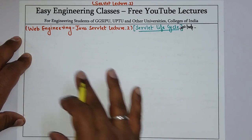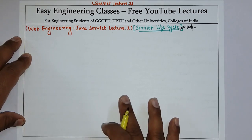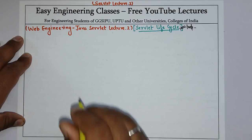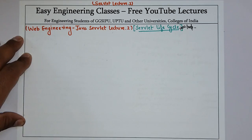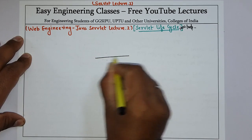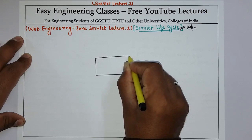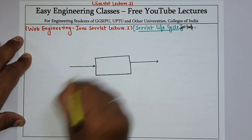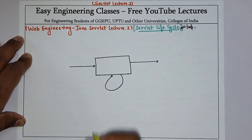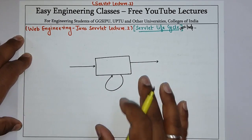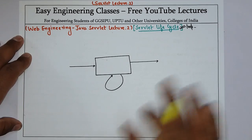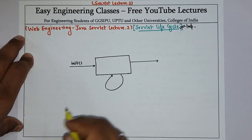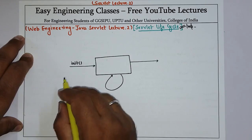So what is servlet life cycle? We will see it with the help of a diagram and then look at the various functions present in each stage of the servlet. Let me draw the diagram first. Whenever a servlet is called, that is whenever a request is made by the browser, the first stage is init — that is the initialization stage — and it is done whenever a browser calls the servlet.